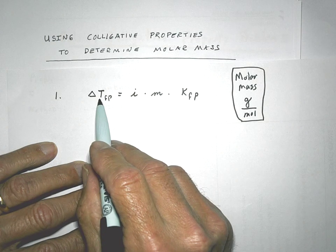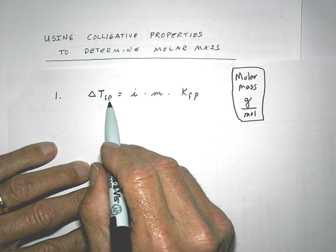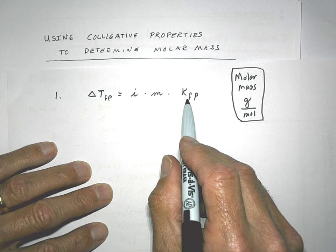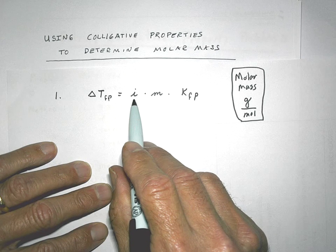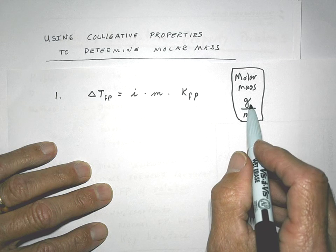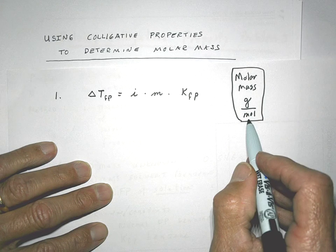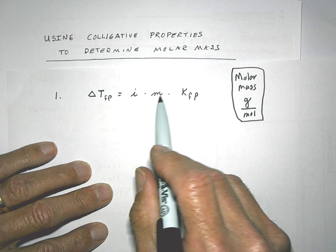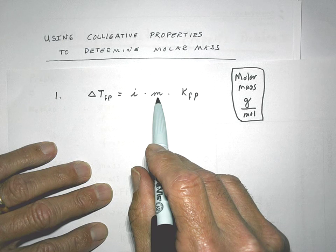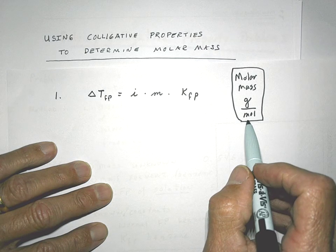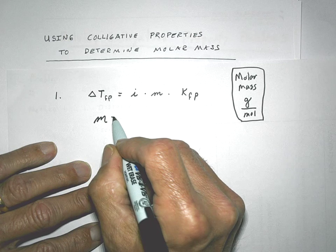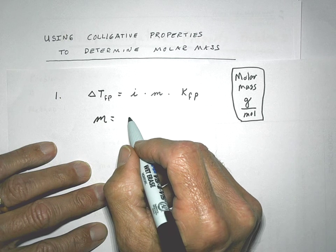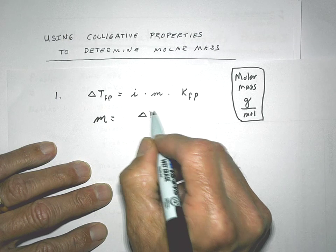In this case, I know the change in temperature, or I can find that out from the data. I know the freezing point, and there's a way I can figure out what the value for i is. To get molecular mass, at some point we have to work with moles. Molality is a way that can get me to the value of figuring out how many moles I have. So what we're going to do is rearrange this equation and solve for molality. That is our step one.